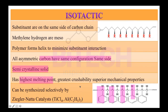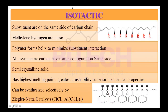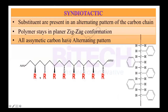These polymers are frequently produced using the Ziegler-Natta catalyst, which consists of titanium tetrachloride and triethylaluminum. Now let's proceed to syndiotactic polymers, where all substituents are present in an alternating pattern along the carbon chain.